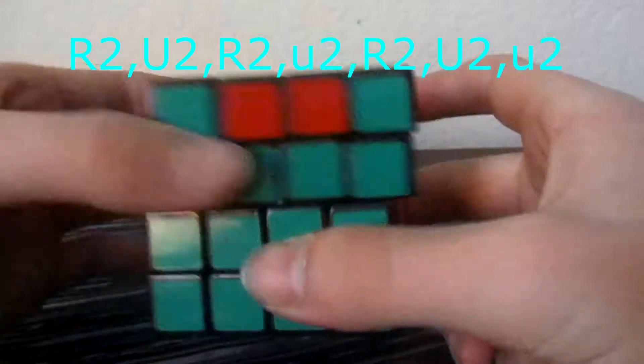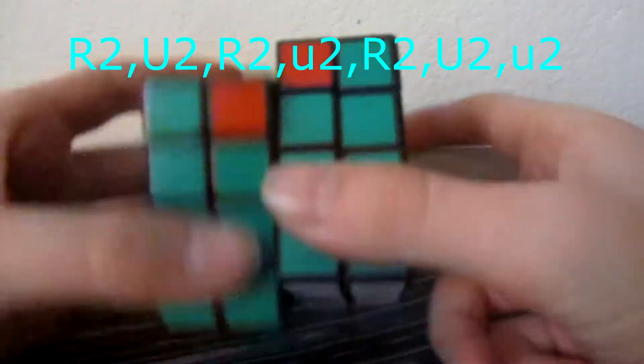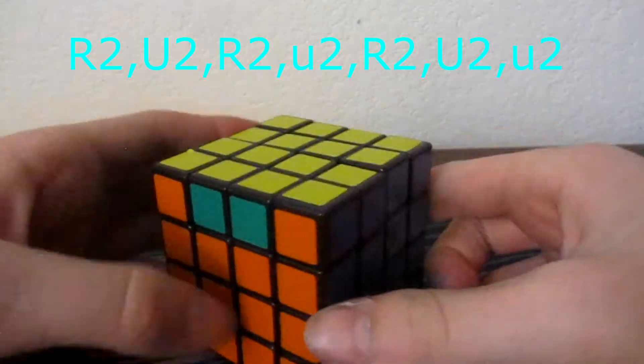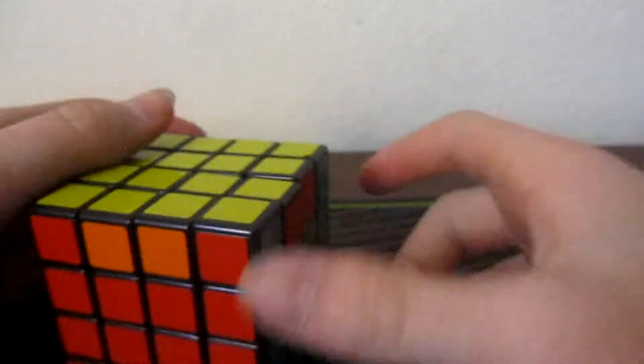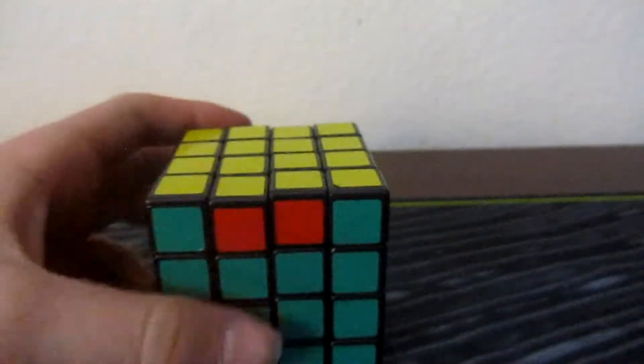By double up, I mean both two layers. So that's the easiest parity to solve out of the 4x4. I'm going to show you the next case.